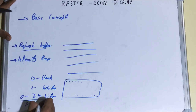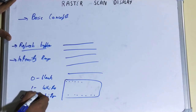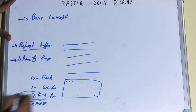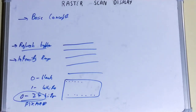In a colored raster scan display, the frame buffer was called a pixmap or pixel map. For each particular pixel, the intensity could be anywhere from 0 to 24 bits — 24 being the maximum white spot and 0 being black. So this was the idea of intensity values.